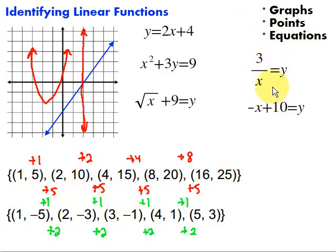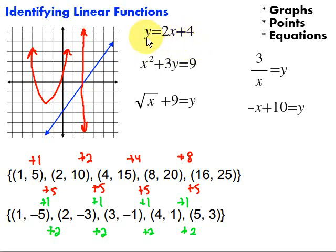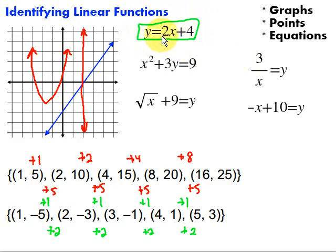Finally, let's take a look at some equations to determine if they're linear functions. If I look at the equation and x and y are just to the power of 1, and they're not multiplied together, not in a denominator, and not under a square root or a radical, then it would be linear. This first example would be a linear function because x and y are not multiplied together, they are just to the power of 1, not in the denominator, and not in a radical symbol.